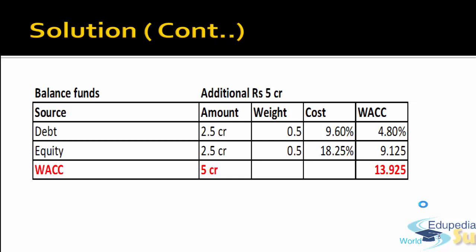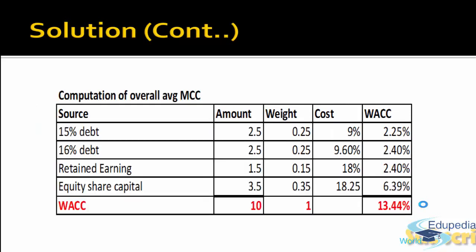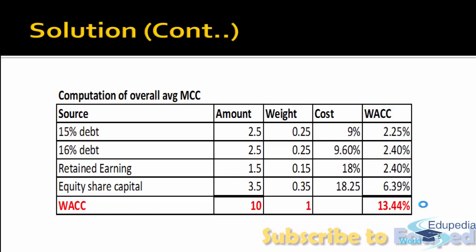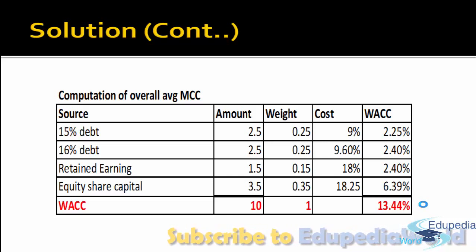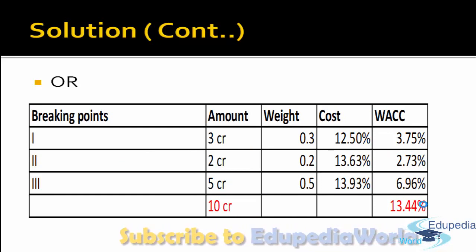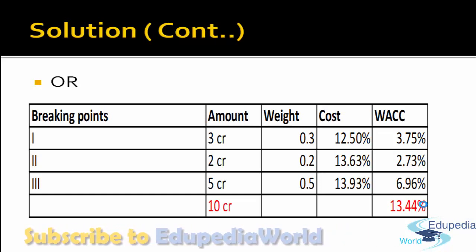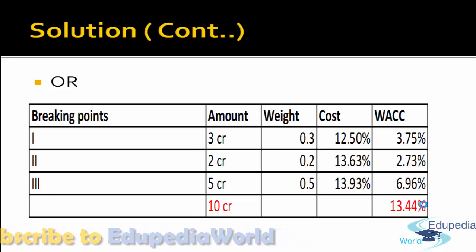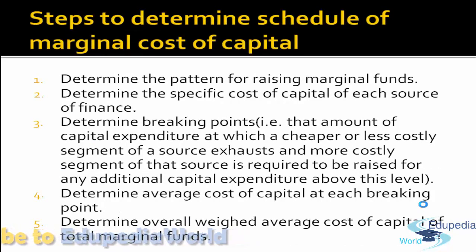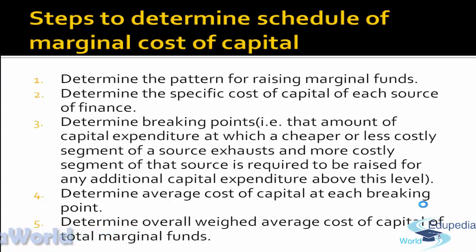To compute the overall cost of raising 10 CR additional funds: 15% debt of 2.5 CR, 16% debt of 2.5 CR, retained earnings of 1.5 CR, and equity share capital. We can either compute the weight of each source of finance and multiply it with their specific cost, or the other method — at each breaking point we have computed the WACC, and we can again multiply it with the weights to compute the overall weighted average cost of capital. Whatever we have discussed — these are the steps to determine marginal cost of capital. All these things are quite logical. This is just for noting purposes in case you forget something.